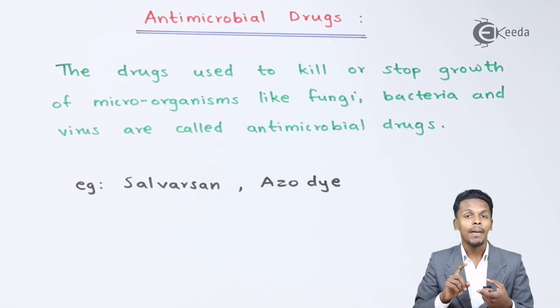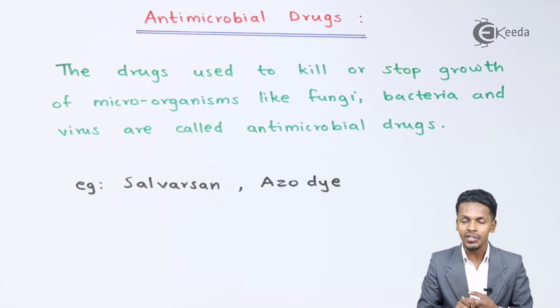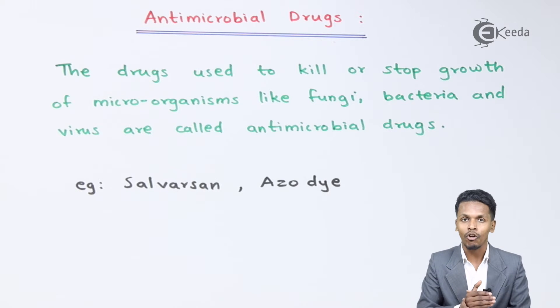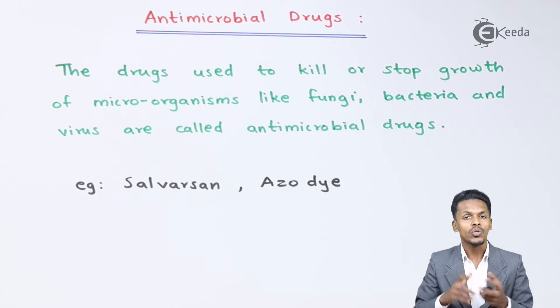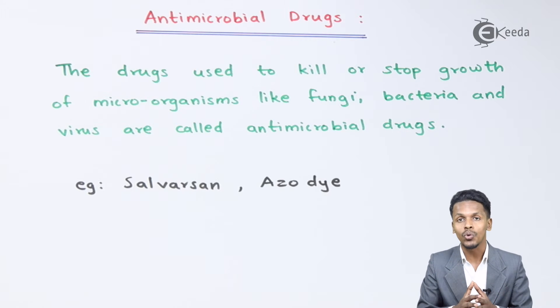So based on that, the first type is bactericidal. Bactericidal drugs are the ones which kill the microorganisms. And the next type is bacteriostatic drugs, which are the drugs that stop the growth of the microorganisms.